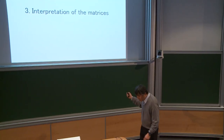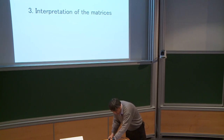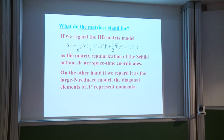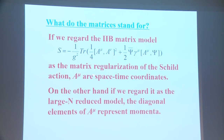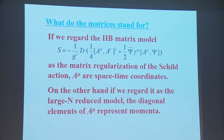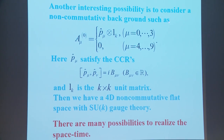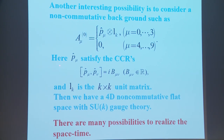I would like to discuss the interpretation of the matrices. If we regard the 2B matrix model as a matrix regularization of the Schild action, A_μ is a space-time coordinate. On the other hand, if we regard it as a large-N reduced model, the diagonal elements of A_μ represent momentum. Another interesting possibility is to consider a non-commutative background where P_μ satisfies the canonical commutation relation and 1_K is a K×K unit matrix. Then we have a four-dimensional non-commutative flat space with SU(K) gauge symmetry.